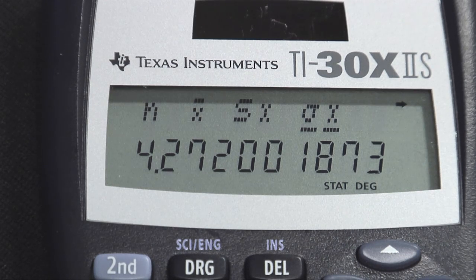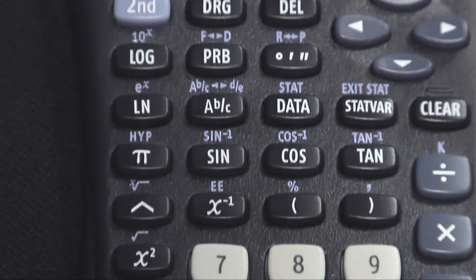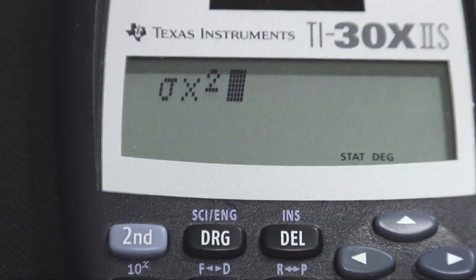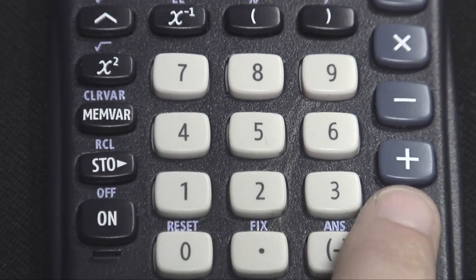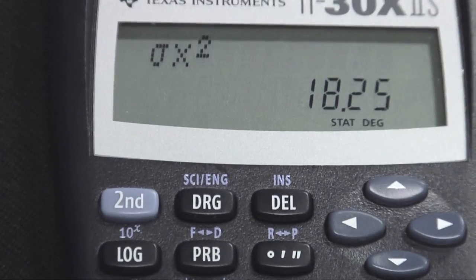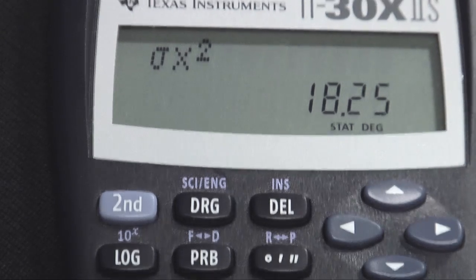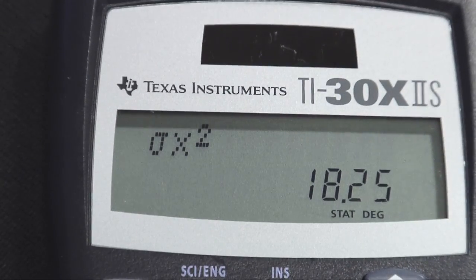I can find the variance the same way. I can leave that highlighted, hit X squared, see that I'm for sure getting the piece I want, hit the enter or equals button, and the population variance is 18.25. And that is how we're going to be using the TI-30X2S.